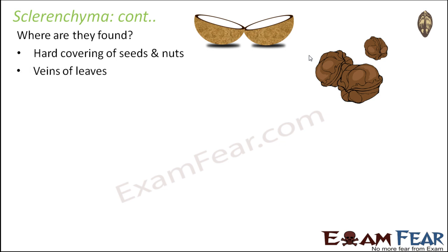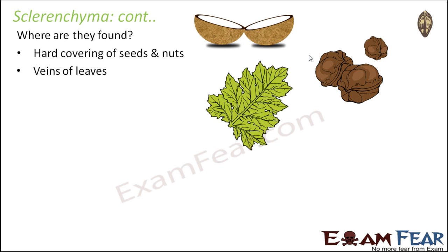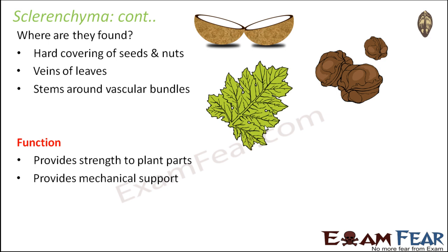They are also present in the veins of leaves, because for a leaf blade, veins are the ones which make the leaf blade stronger — otherwise it would be very thin and papery, but because of the presence of veins it is quite stiff and strong. They are also found in stems around vascular bundles. When you look at the internal structure of the stem or a root, the xylem and phloem are arranged in a specific fashion, and just around the xylem and phloem, sclerenchyma is present to provide additional support. Their function is to provide strength and mechanical support to plant parts.